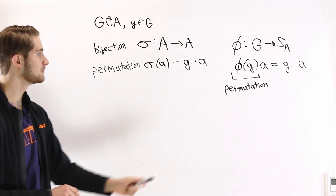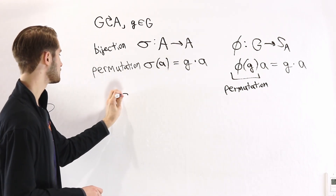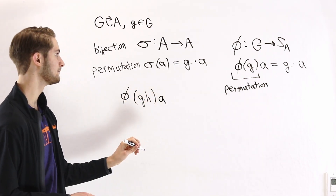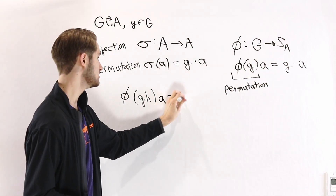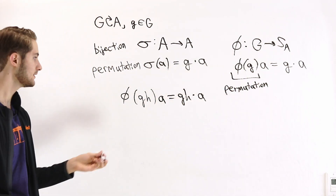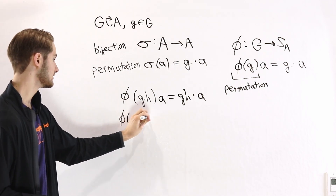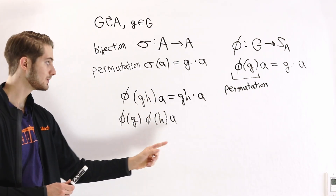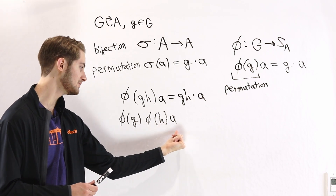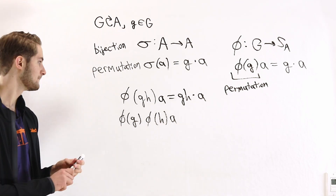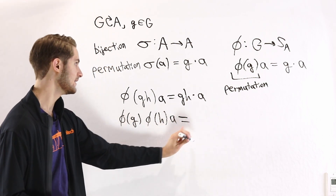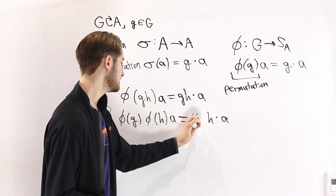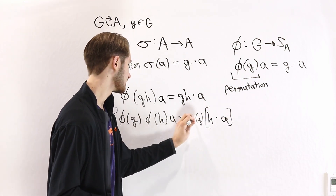In particular, let's look at what happens when we take φ of a product. Suppose we look at φ(gh) for two elements of the group and apply it to a. By the definition we have, that's going to be (gh)·a. On the other hand, what if we take φ(g)∘φ(h) applied to a? Since these are both permutations, we first apply φ(h) to a, then apply φ(g) to the result. So φ(h)(a) by definition equals h·a in the group action, and we then want to apply φ(g) to this h·a.